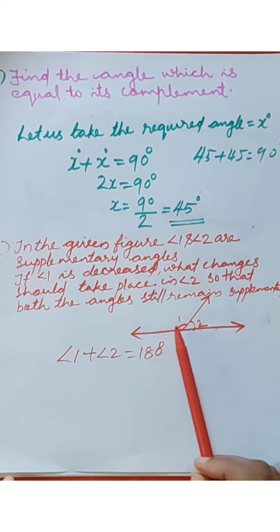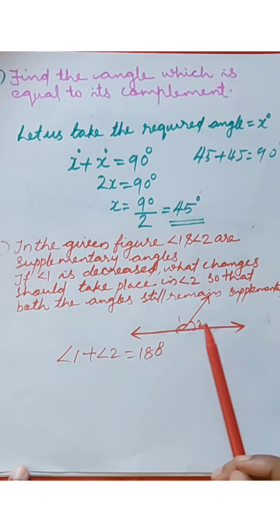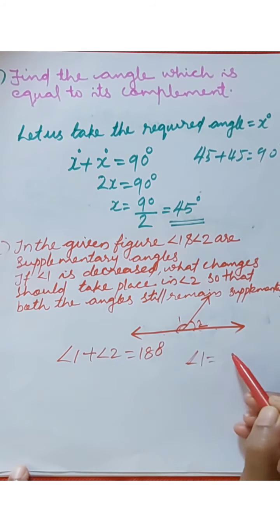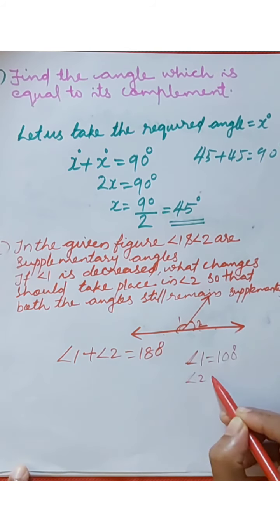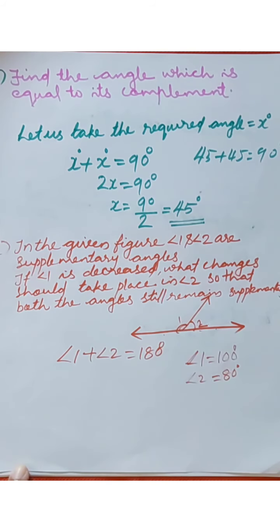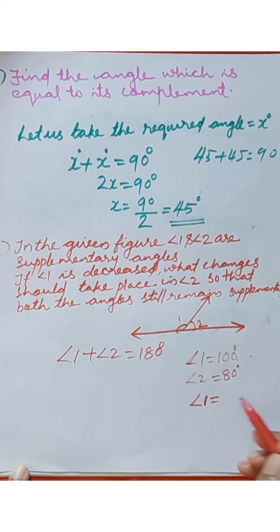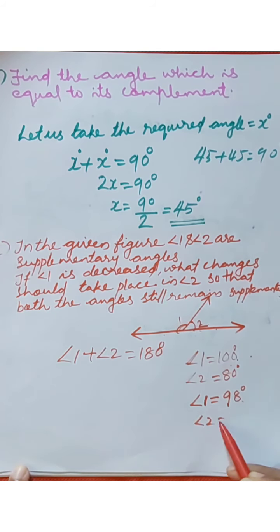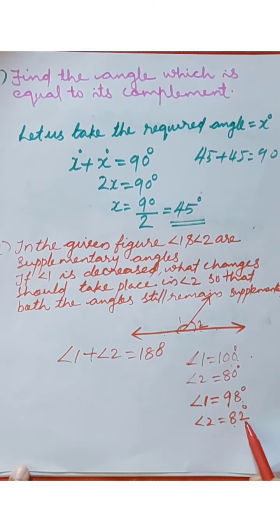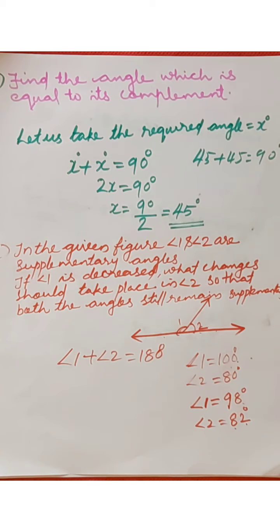If angle 1 decreases by some degree, then angle 2 will be increased by the same degree. For example, angle 1 equals 100 degrees and angle 2 equals 80 degrees. If angle 1 is decreased to 98 degrees, angle 2 becomes 82 degrees — 2 degrees increased. Angle 1 is decreased, so angle 2 is increased.